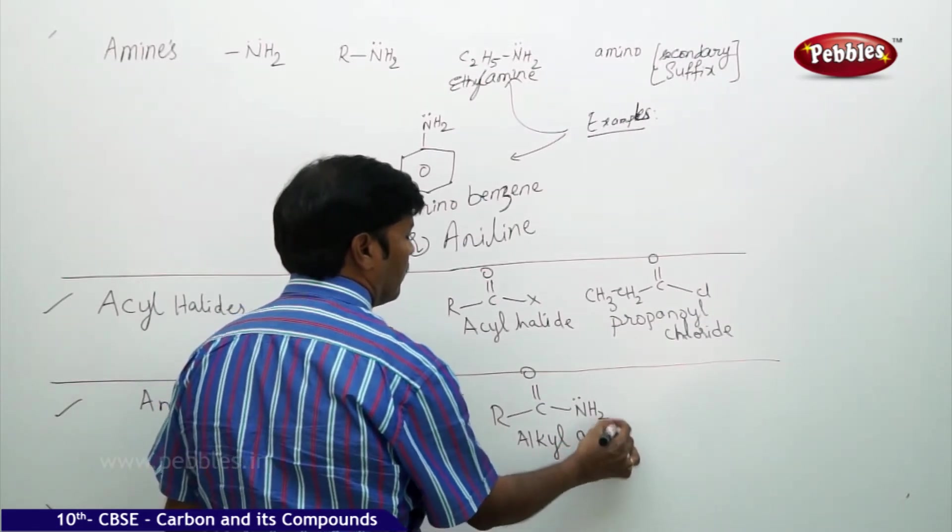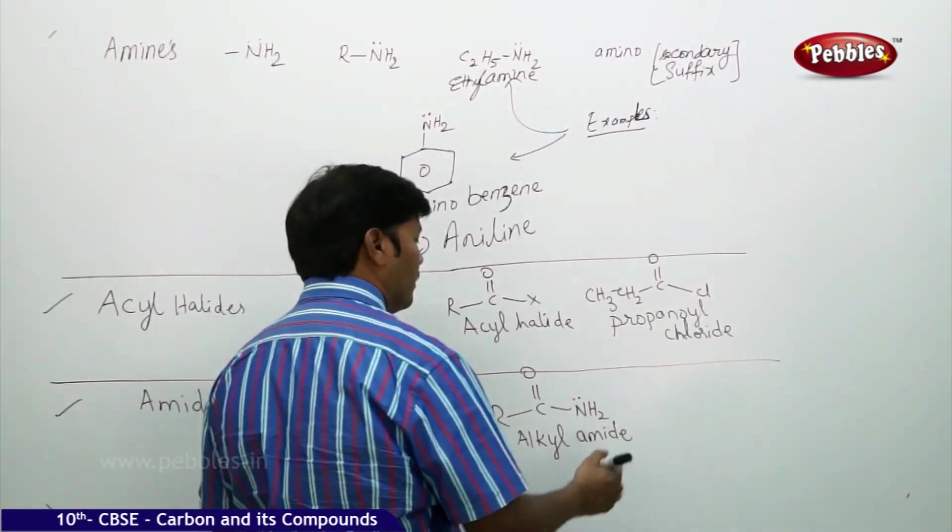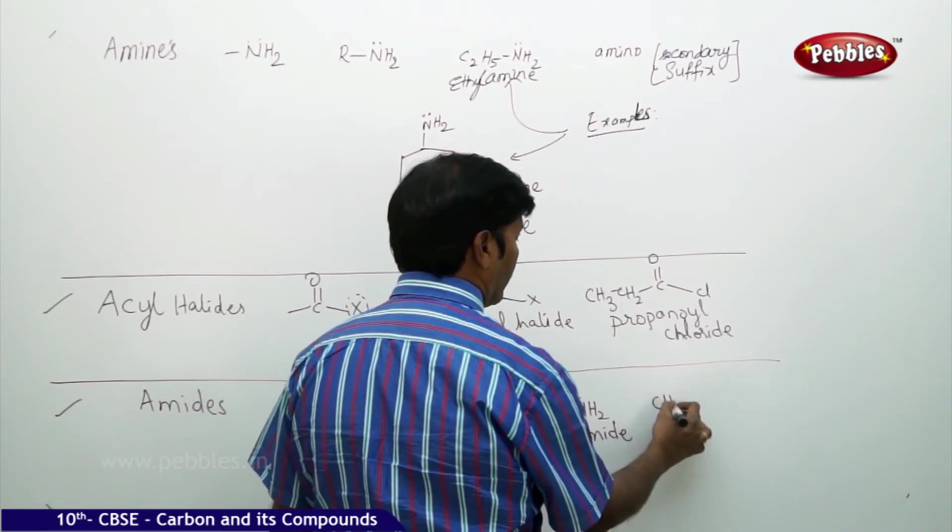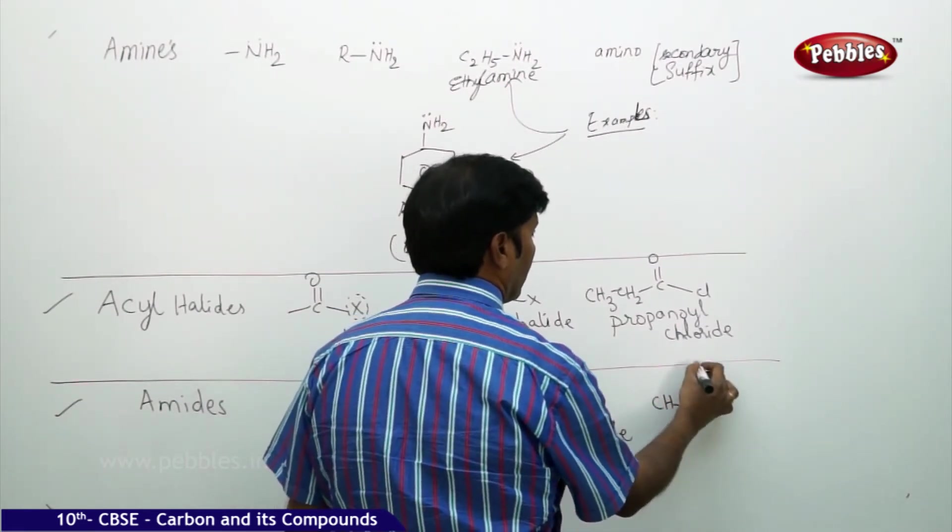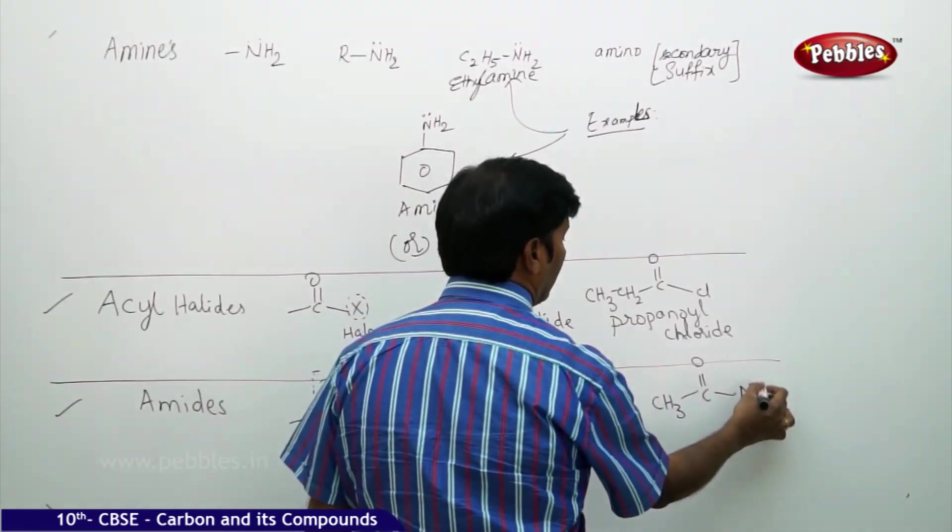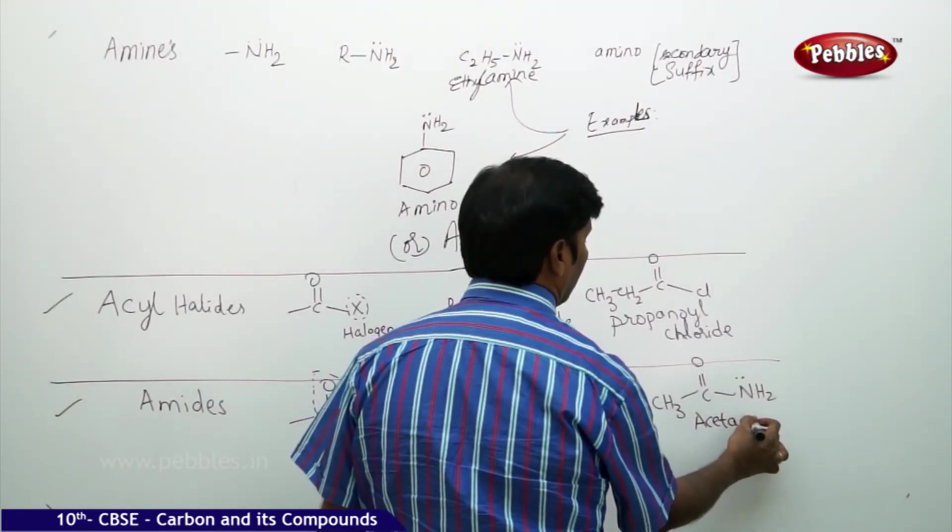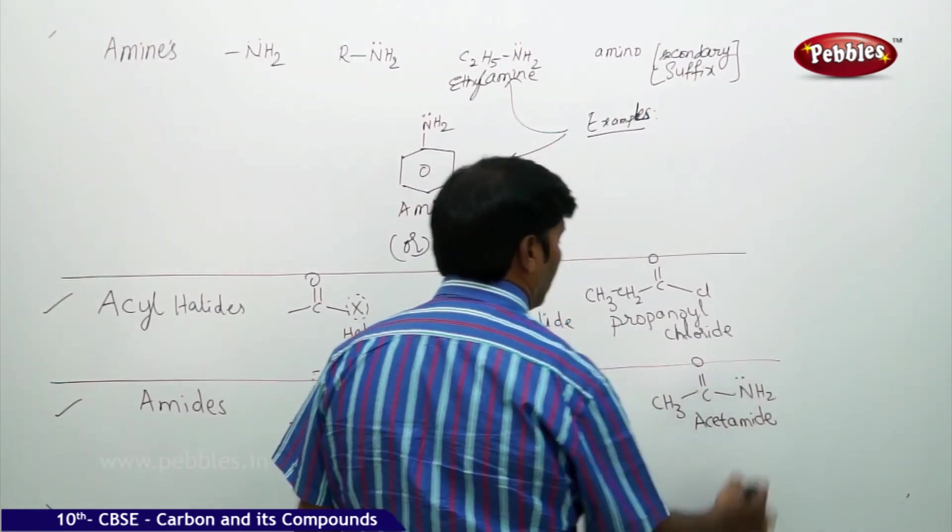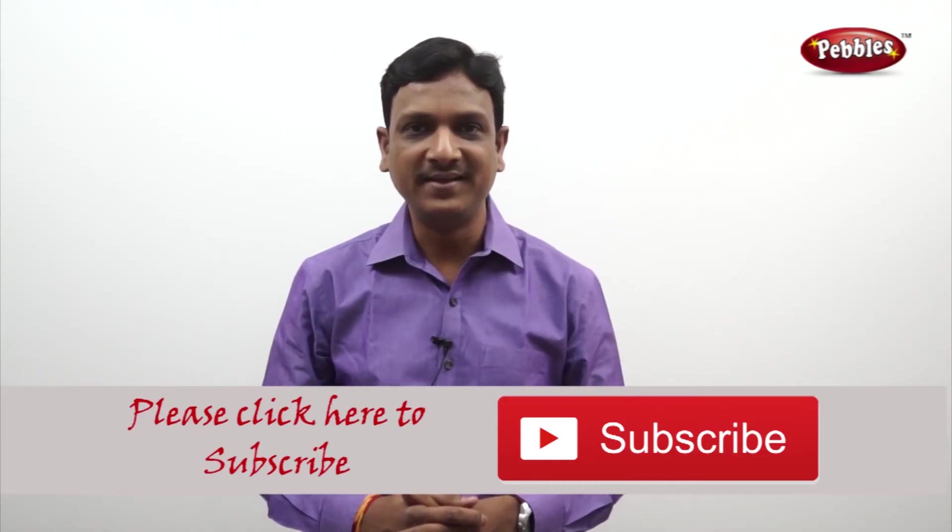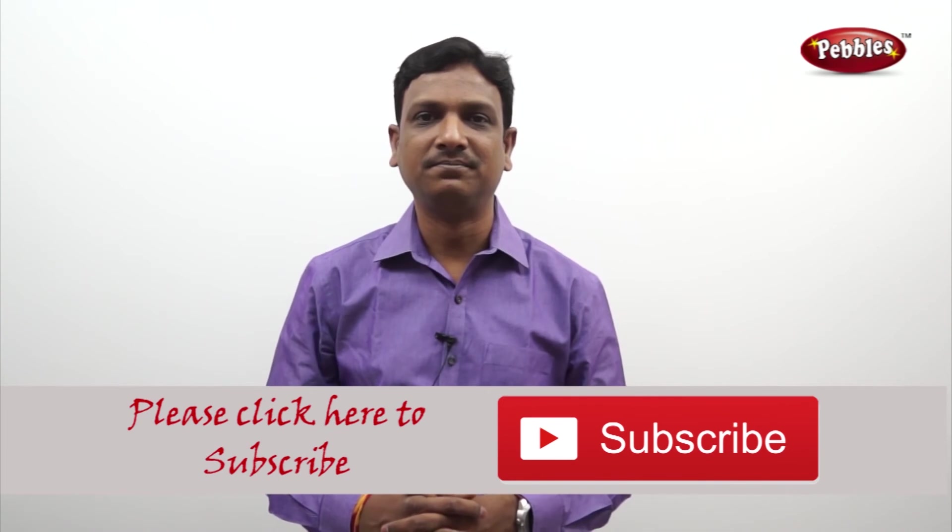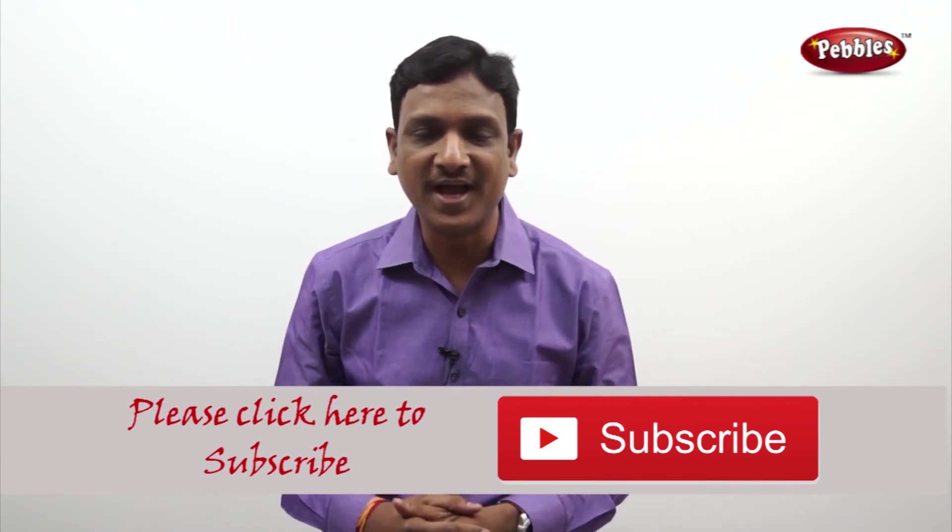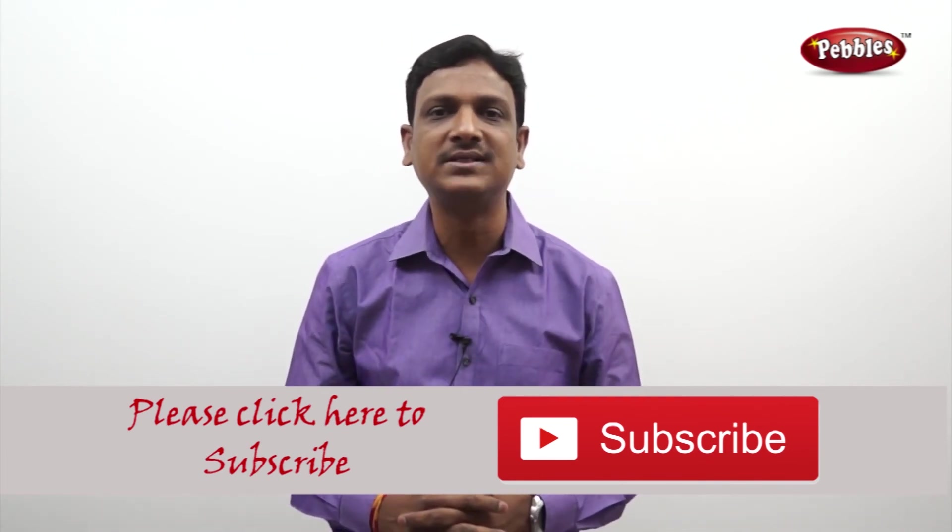Alkyl amide. Example: you can take CH3-C=O-NH2, acetamide. If you like this video, please give a thumbs up. Please subscribe to our channel to get more videos on CBSE syllabus.